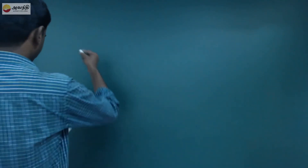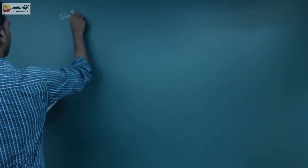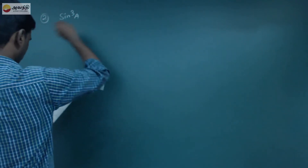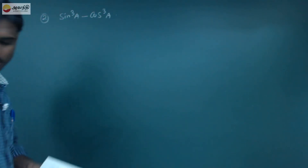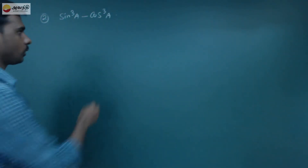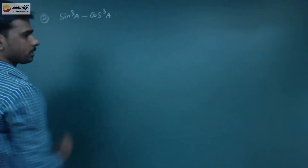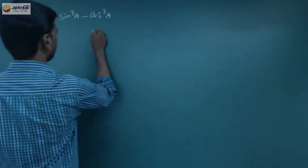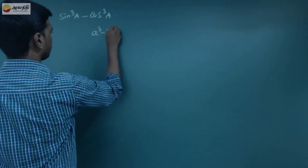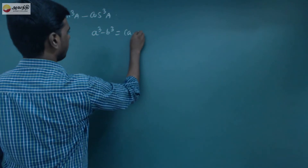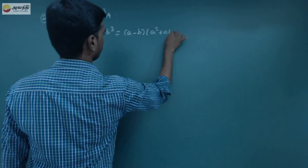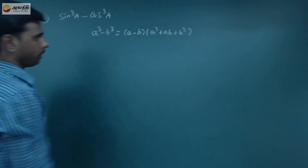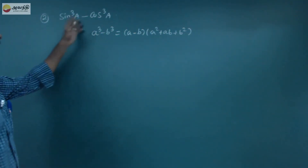We need to prove sin cube a minus cos cube a. This is in the form of a cube minus b cube. The formula for a cube minus b cube equals a minus b into a square plus ab plus b square. So using this formula, we will prove sin cube a minus cos cube a.